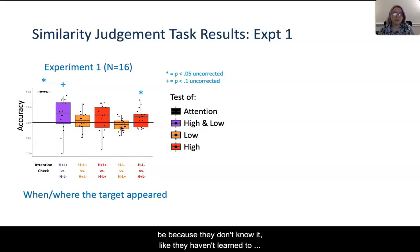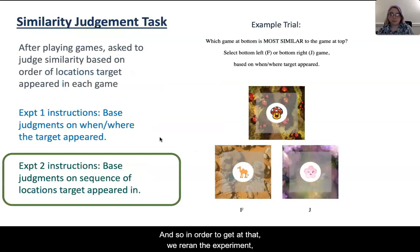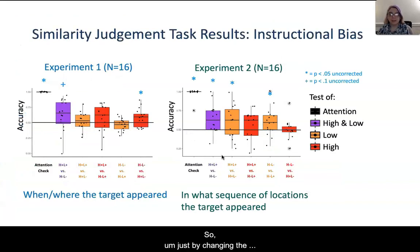That could either be because they don't know it, like they haven't learned to associate the low level order condition with the games, or that they're just not using it although they do know it. So to get at that, we reran the experiment but with different instructions that they should base their similarity judgments on the sequence of locations the target appeared in, which we thought would bias them to use more of this low level order information if it was available. And that's what we found. Just by changing the instructions for the similarity judgment task while keeping training the same, they're now sensitive to the low level order condition of the games in their similarity judgments.